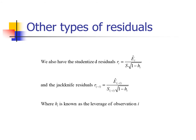To clarify: the formula from the previous slide gives standardized residuals. We also have studentized residuals, denoted r-sub-i. The formula looks very similar but adds a square root of one minus h in the denominator, where h is referred to as the leverage of observation i. We'll talk more about what leverage is in a few slides — for now just note that this extra factor appears in the formula.